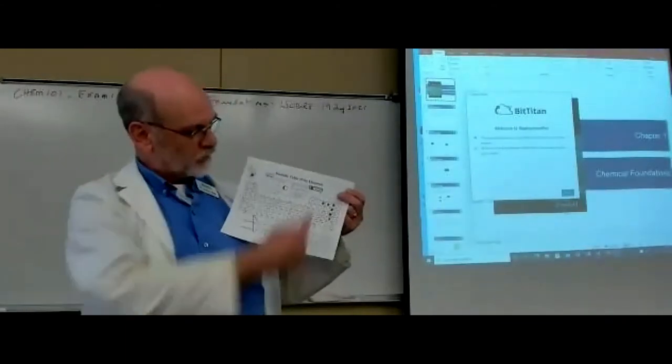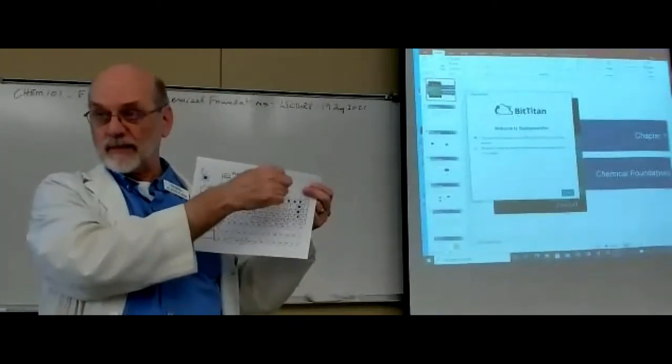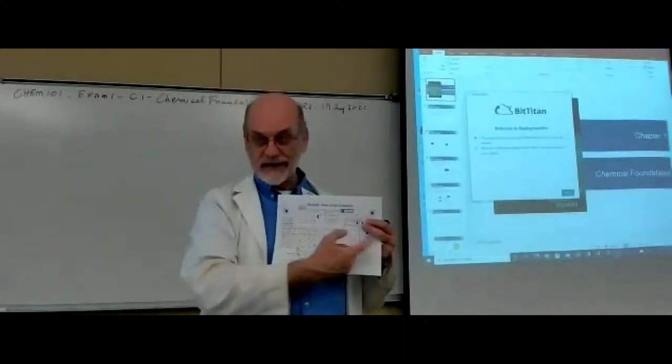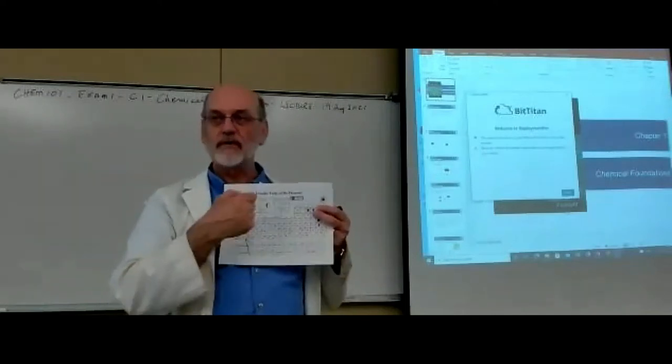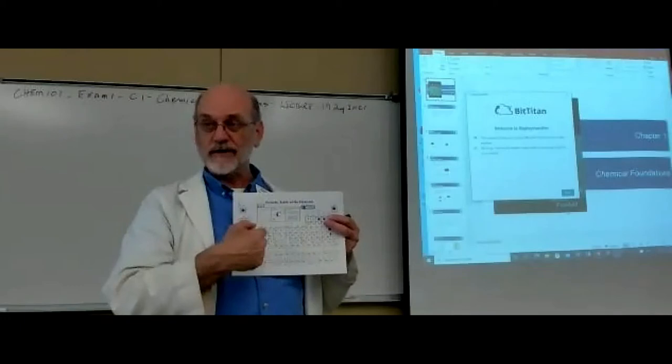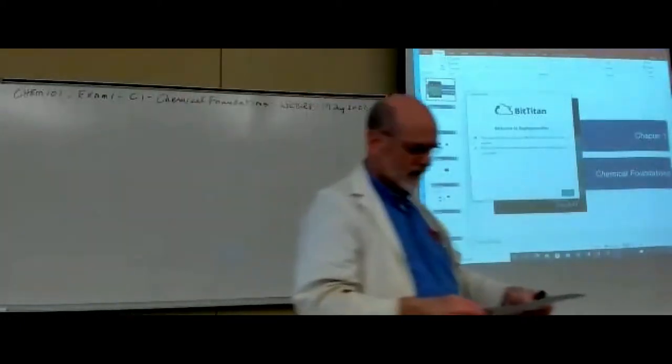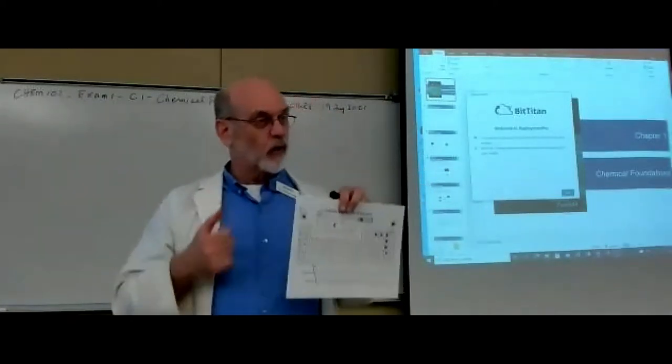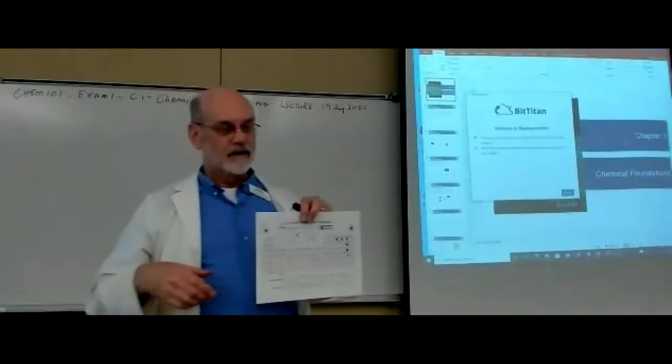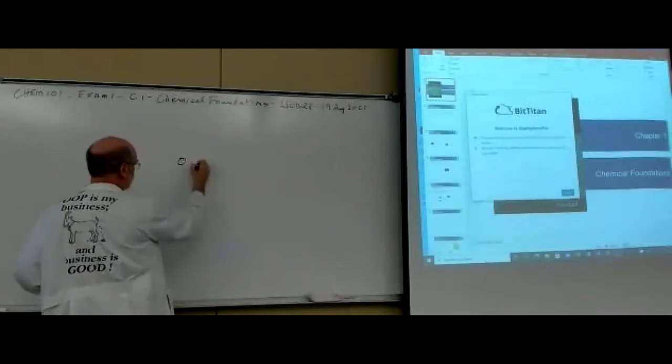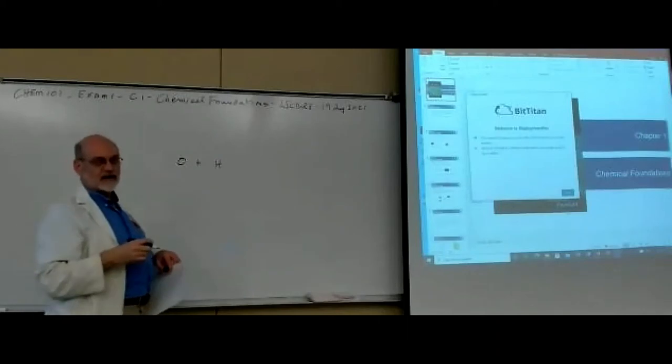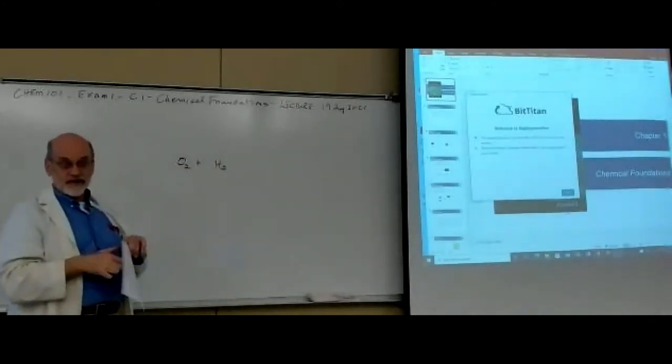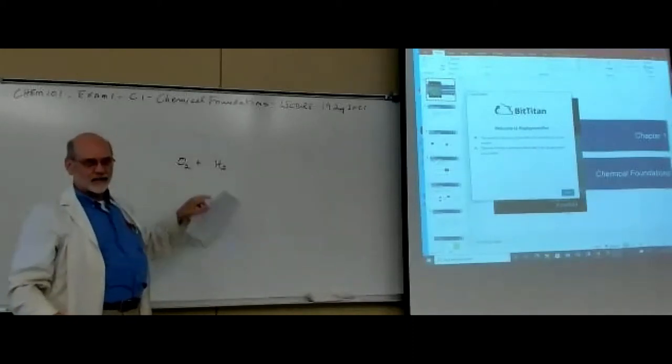You don't have to memorize the atomic numbers, the atomic weights, or any of the charges, just the symbols. Also, pay attention to these ones with the blue squares on them. Those are diatomic elements. If a word problem says oxygen reacts with hydrogen, you know that you don't write O and H. That's wrong. They're always diatomic for our purposes.